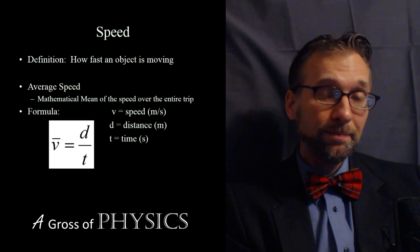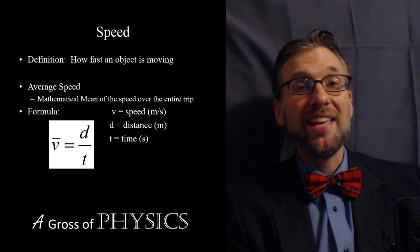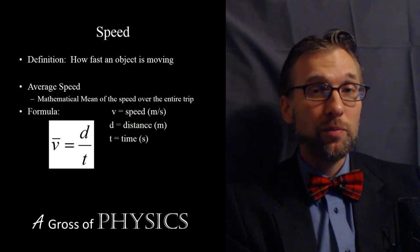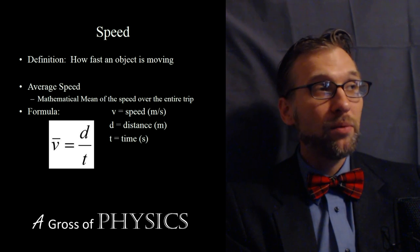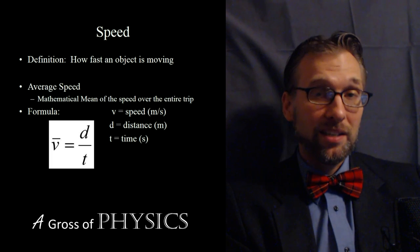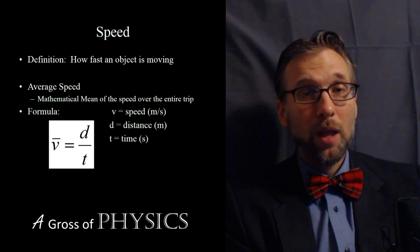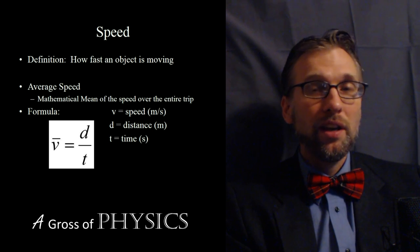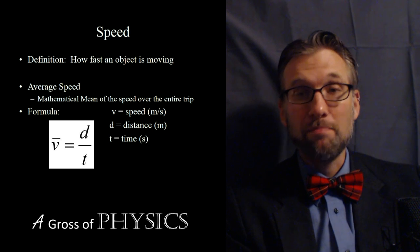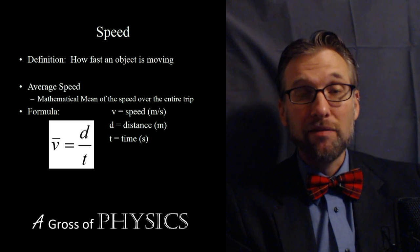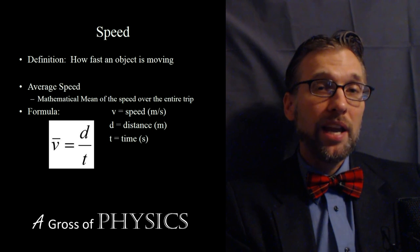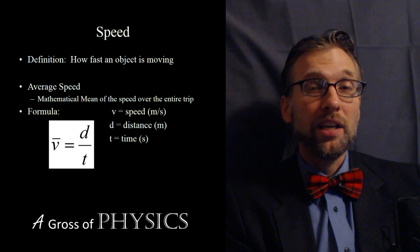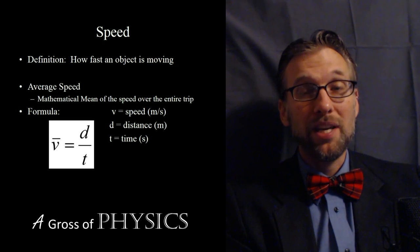Mathematically, the equation is V equals D over T to find average speed. V is speed—we'll see why it's not S in a moment. D is distance and T is time. We use the bar over the V to represent the average. In math class, you often use it as mean; mean and average are synonymous. We'll use V-bar equals D over T to represent average speed.